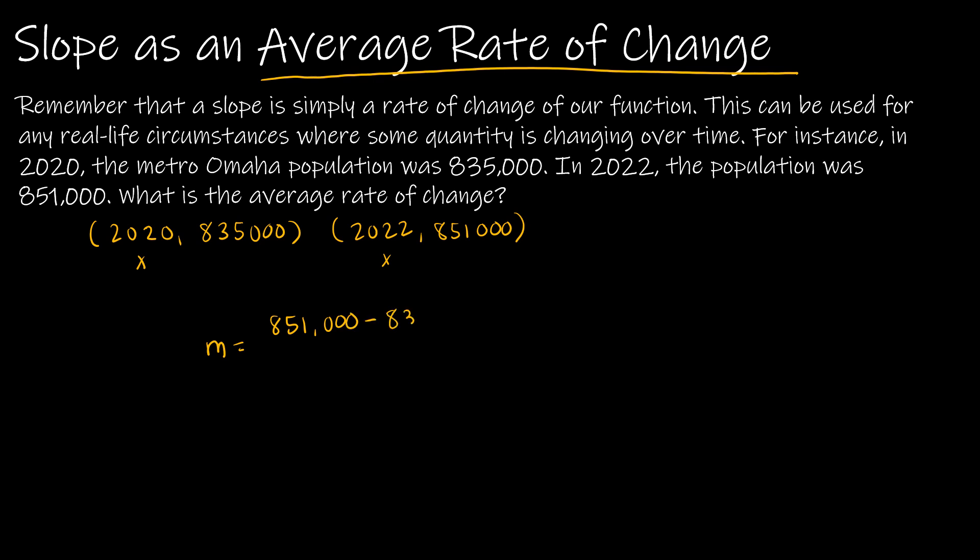851 minus 835 in thousands, of course. And then 2022 minus 2020 gives me 16,000 over 2, which is 8,000. Now remember, this is an average rate of change. So it's saying the population increased by about 8,000 per year. That means it's feasible that in 2021, the population would be 835,000 plus 8,000 or 843,000. But we don't know that for sure. We just know that that's about where that population would be.